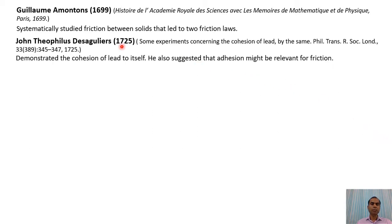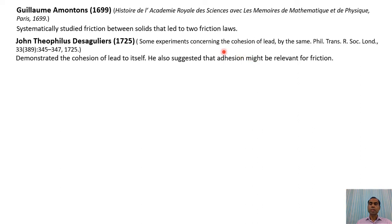After 1699, in 1725, J.T. Désaguliers conducted some experiments on the cohesion of lead. He found that the adhesion force was quite substantial, and therefore suggested that adhesion might be relevant for friction. This work is important in tribology because it was the first time somebody indicated that adhesion has some contribution to friction. Until then, adhesion was not considered a cause of friction, but more recent studies have clearly indicated that adhesion plays a very substantial role.